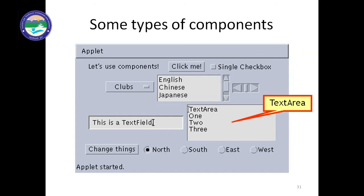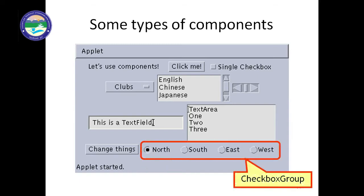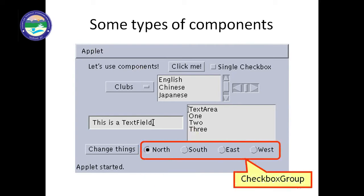In TextArea we can include more than one row, while in TextField we can write only one line or a limited string. Checkboxes can also be used as radio buttons. In a plain Checkbox we can select more than one item, but in a CheckboxGroup we can select only one item.